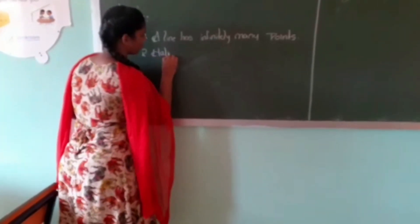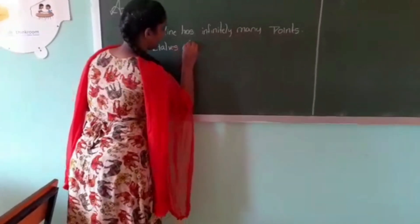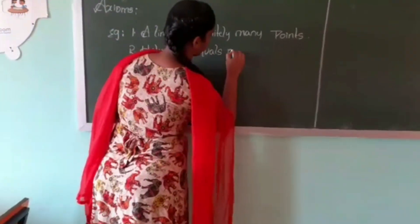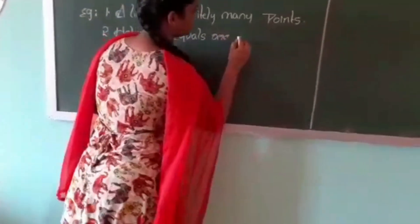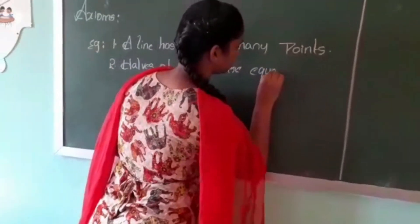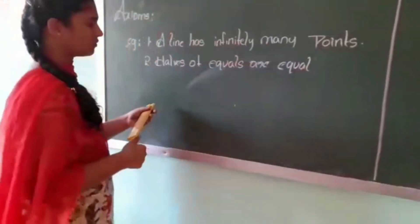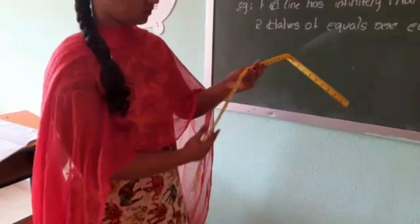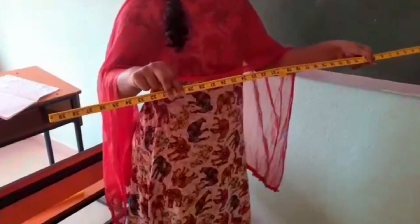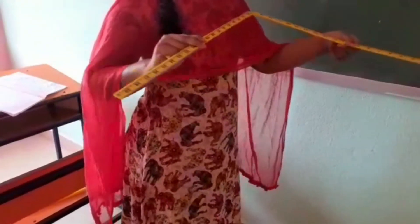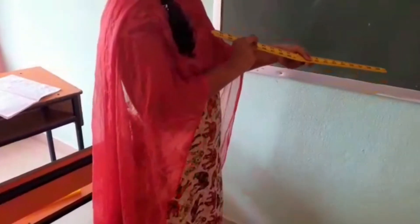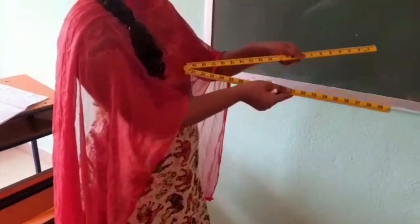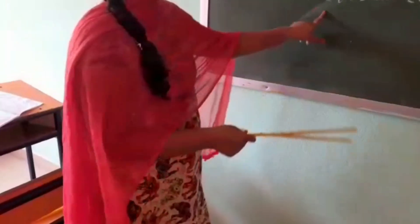Things equal to the same things are equal to each other. This is a scale of 100 centimetres. Now I am dividing it into equal halves. We can see that these both are equal to each other, so we can say that things equal to equals are equal.